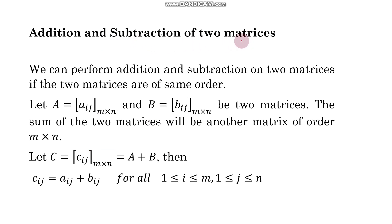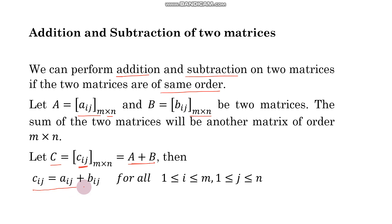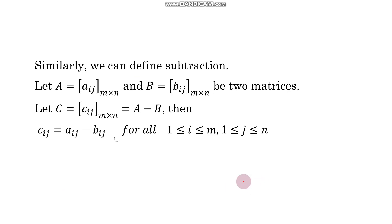Addition and subtraction of two matrices. We can perform addition and subtraction of two matrices only if the two matrices are of the same order; otherwise, you cannot perform these operations. Let A equal to aij of order m by n and B equal to bij of order m by n. The sum A plus B is another matrix C, denoted Cij, where Cij equals aij plus bij for all i and j in range. Similarly, for subtraction, if A minus B equals C, then Cij equals aij minus bij for all i and j in that range.